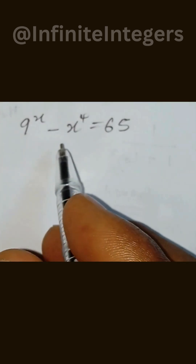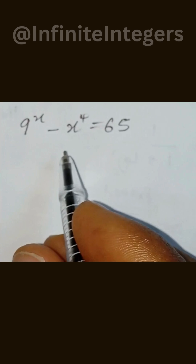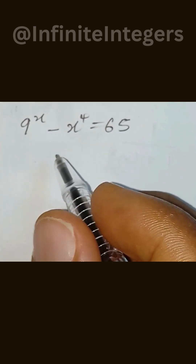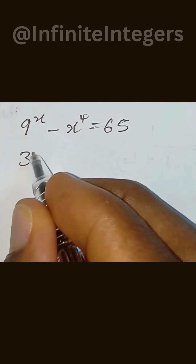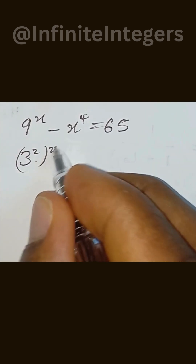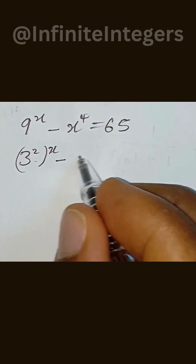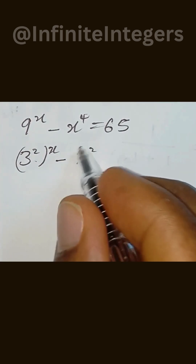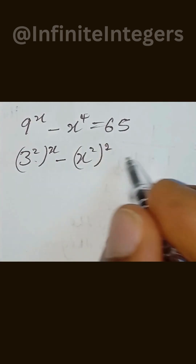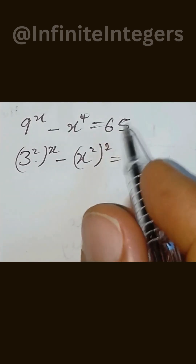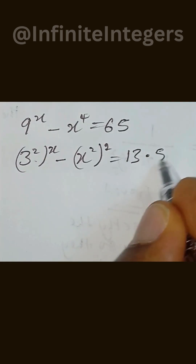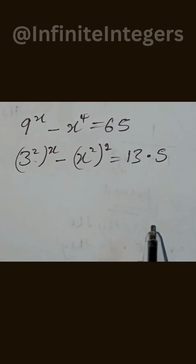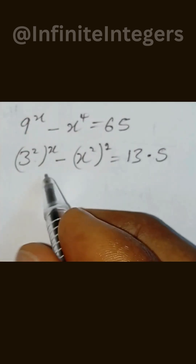Let's solve for x in this expression. To solve for x, we simplify both sides. This will become 3 to the power of 2 to the power of x, minus x to the power of 2, in brackets, to the power of 2, and this is simplified as 13 multiplied by 5.